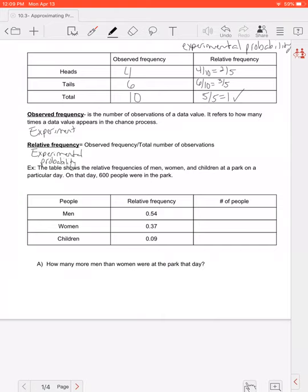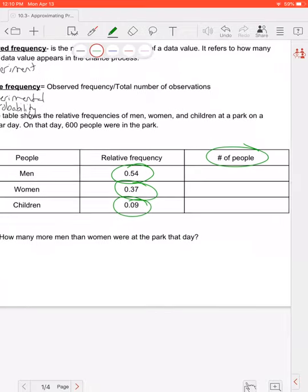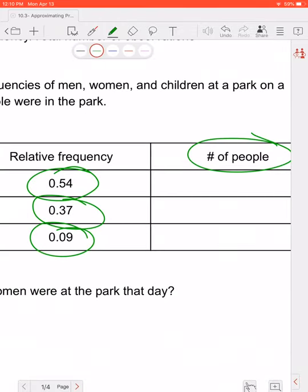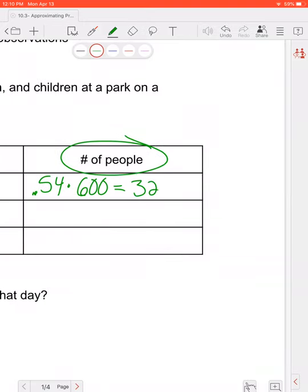Now sometimes they'll just give you the relative frequencies. And a lot of times they're written as either decimals or percentages. So the table shows relative frequency of men, women, and children in a park. So we have men, women, and children on a particular day. So obviously this is not during the coronavirus. But on a regular day there are about 600 people in the park. And they're saying the relative frequency of getting a man is 0.54, and of getting a woman is 0.37, and of getting a child is 0.09. And they're asking me, so how many of each people are actually in the park? So for men what we're going to do is we're going to take the 0.54 and multiply it by the total number of people we have. And we can use a calculator for this. So we're going to do 0.54 times 600 in the calculator, and that gives me 324 men in the park.